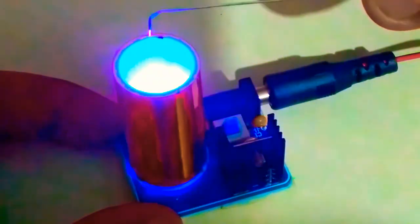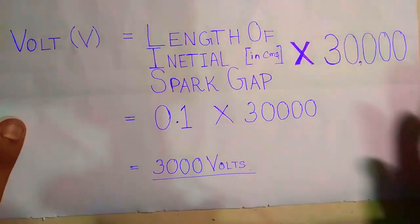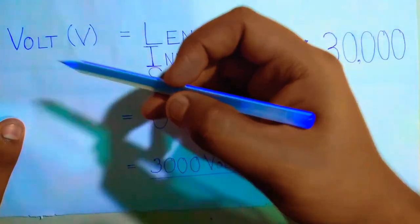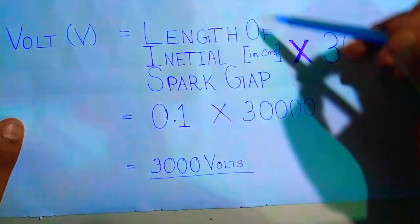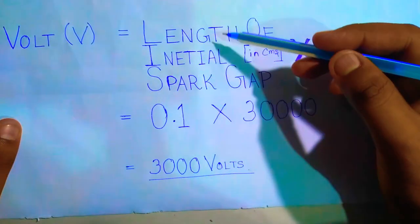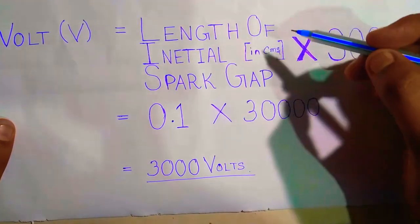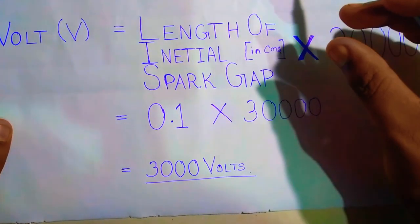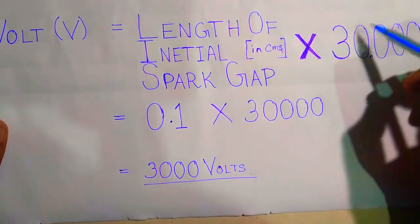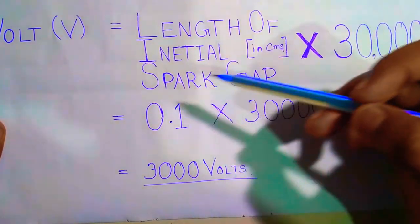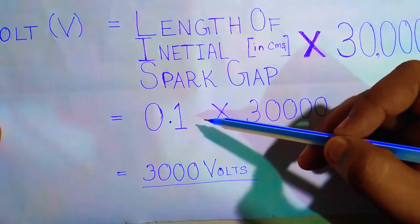As you can see the spark gap is about 0.1 centimeters. To calculate the voltage of the mini Tesla coil we need to use a simple formula which is voltage equals length of the initial spark gap in centimeters multiplied by 30,000.